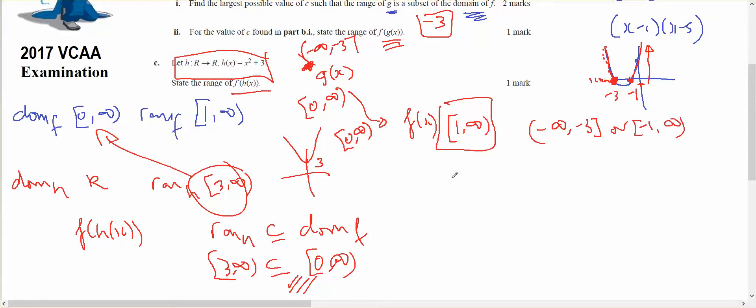If I consider that I go through h of x first, what goes in will be the domain of h, which is all real numbers, and what will come out will be 3 to infinity. Then that will go in through f of x, so I have a restricted domain of 3 to infinity.